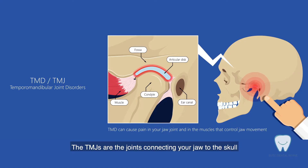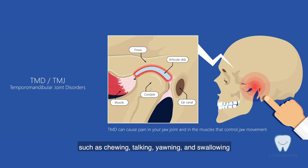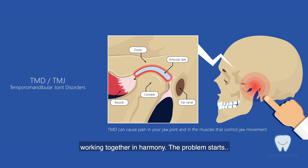The temporomandibular joint is the joint that connects your jaw to the skull. It is one of the most complex systems in our body. Along with the muscles and ligaments, it allows the mandible to perform many movements such as chewing, talking, yawning, and swallowing. When a problem prevents this complex system of muscles, bones, and joints from working together in harmony, the problem starts — and usually it is associated with chronic facial pain.